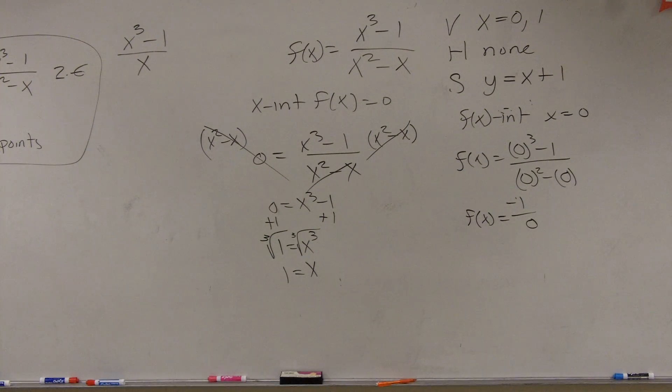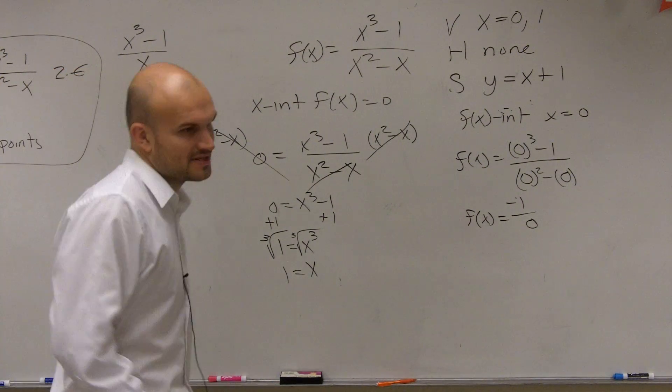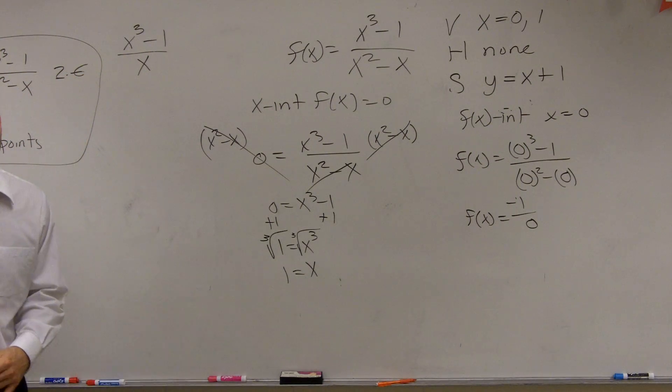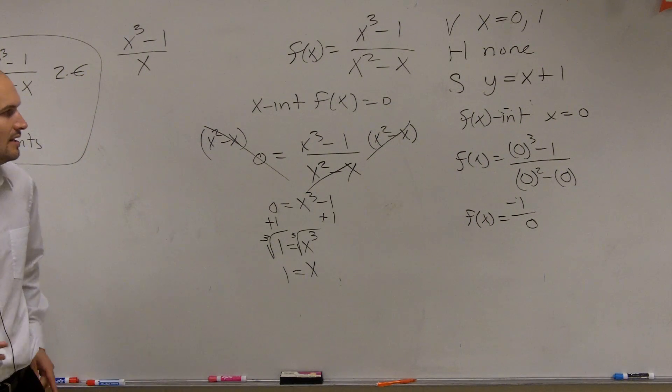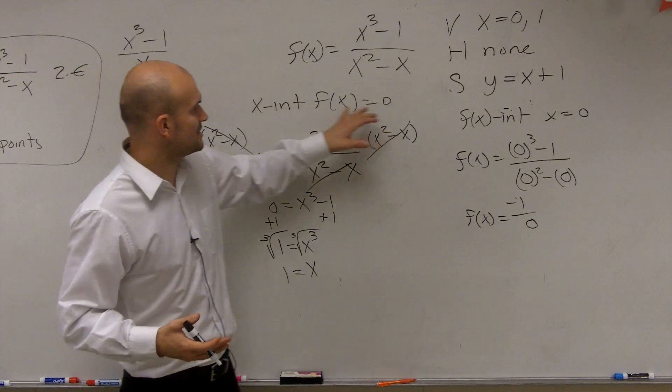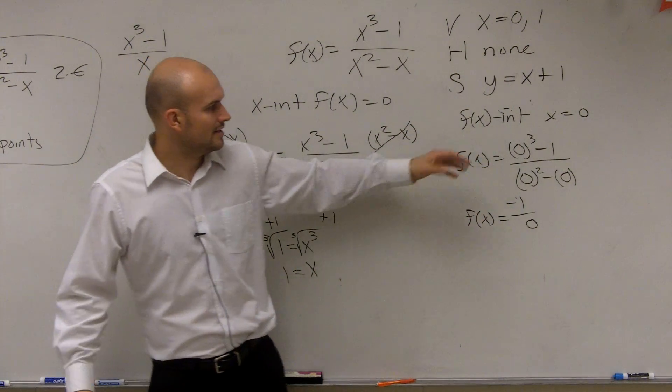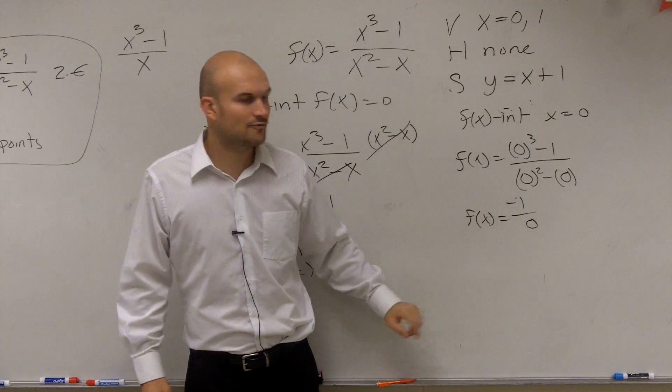All right, listen up please. I want to show you guys a quick little understanding of something, all right? Because I see a lot of students have this misunderstanding. A lot of students look at this. When I found the x-intercept and the f of x-intercept, here, when we plugged it in, we got negative 1 over 0.